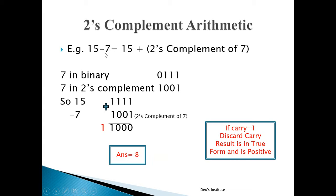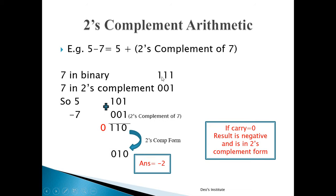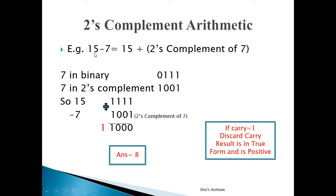One more example: 15 minus 7, computed as 15 plus the 2's complement of 7. Here 15 requires 4 bits, so we represent 7 in 4 bits as 0111. The 2's complement of 0111 is 1001. Adding 1111 (15) and 1001 gives 1000 with carry 1. Carry is 1, so discard it — the result is in true form and is positive. The remaining bits 1000 equal 8, so 15 − 7 = 8.